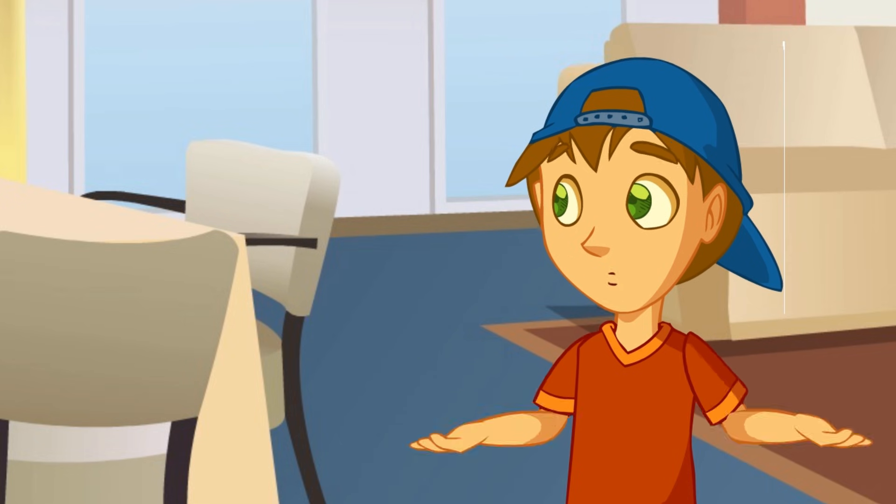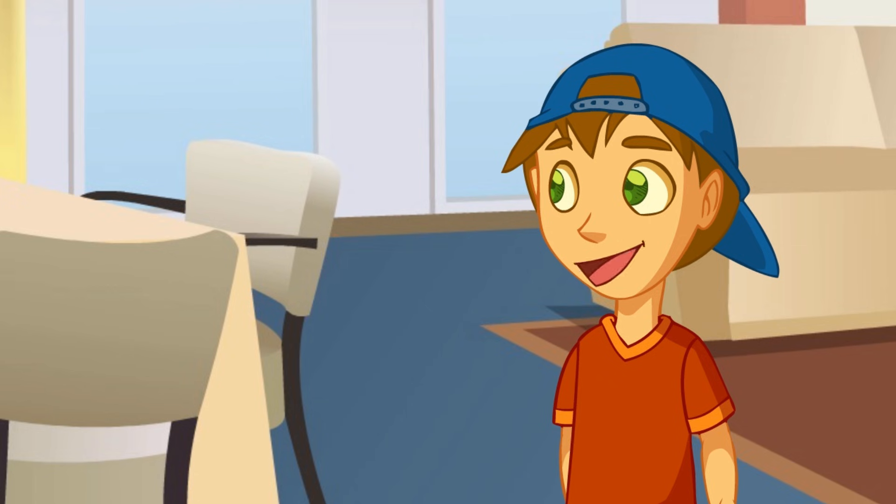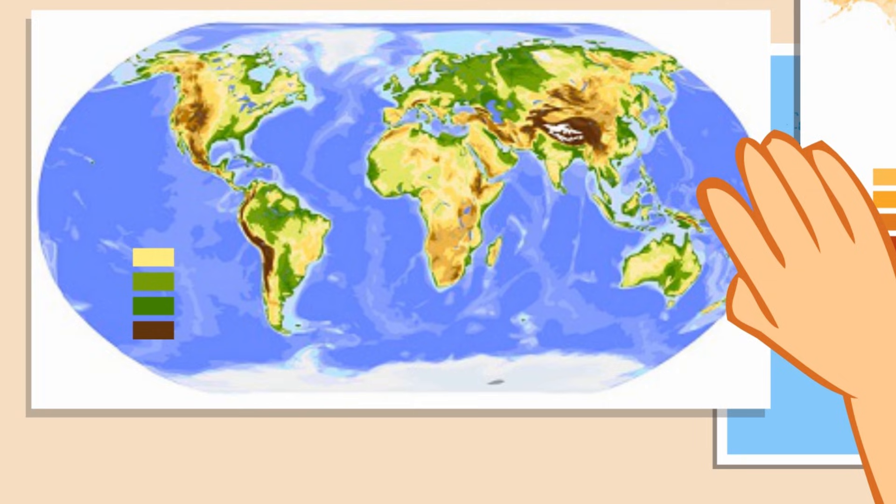And the other colors? Well, the lowest areas in the world are shown in green. Why is the sea painted in so many colors? Shouldn't it be always blue? No, that's because this map also shows how deep the sea is in each place. That's also part of the earth relief.